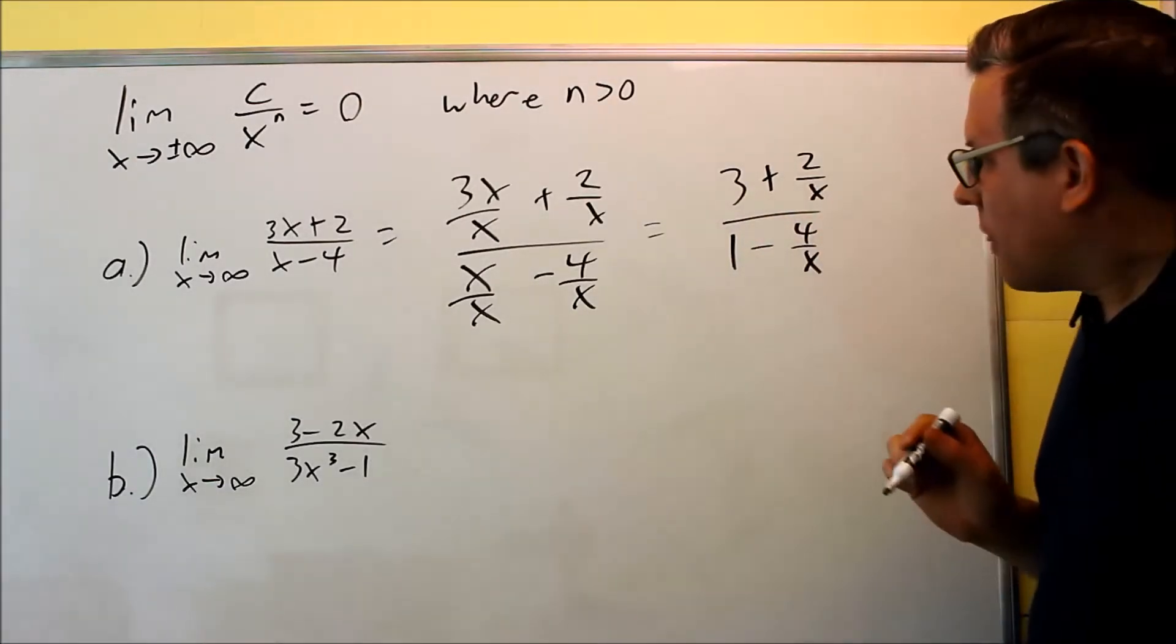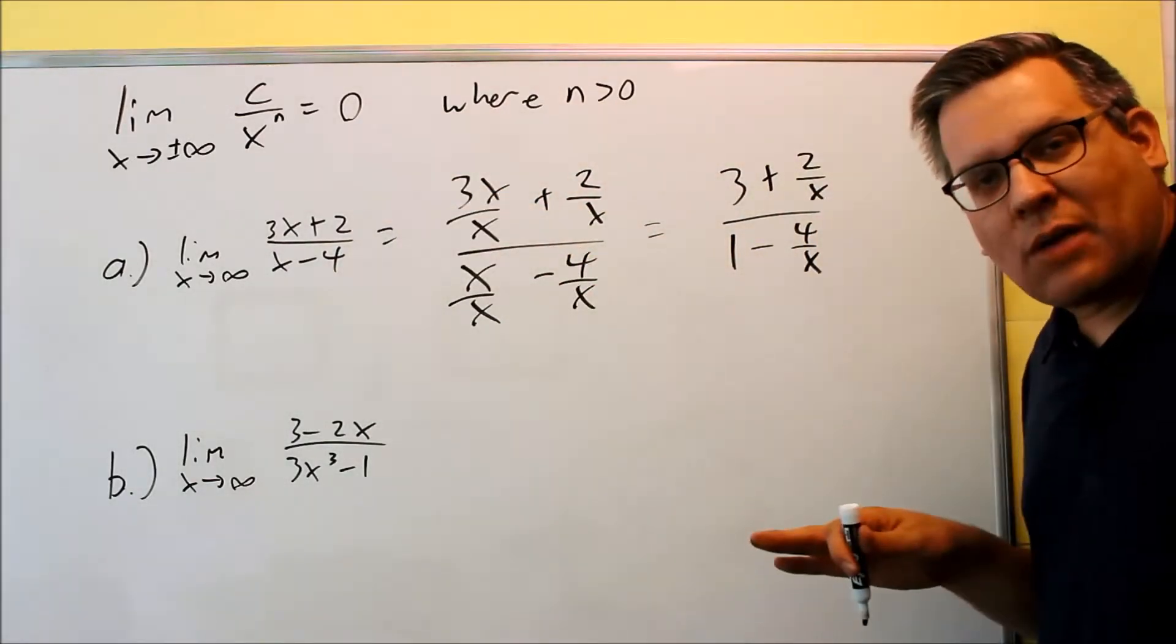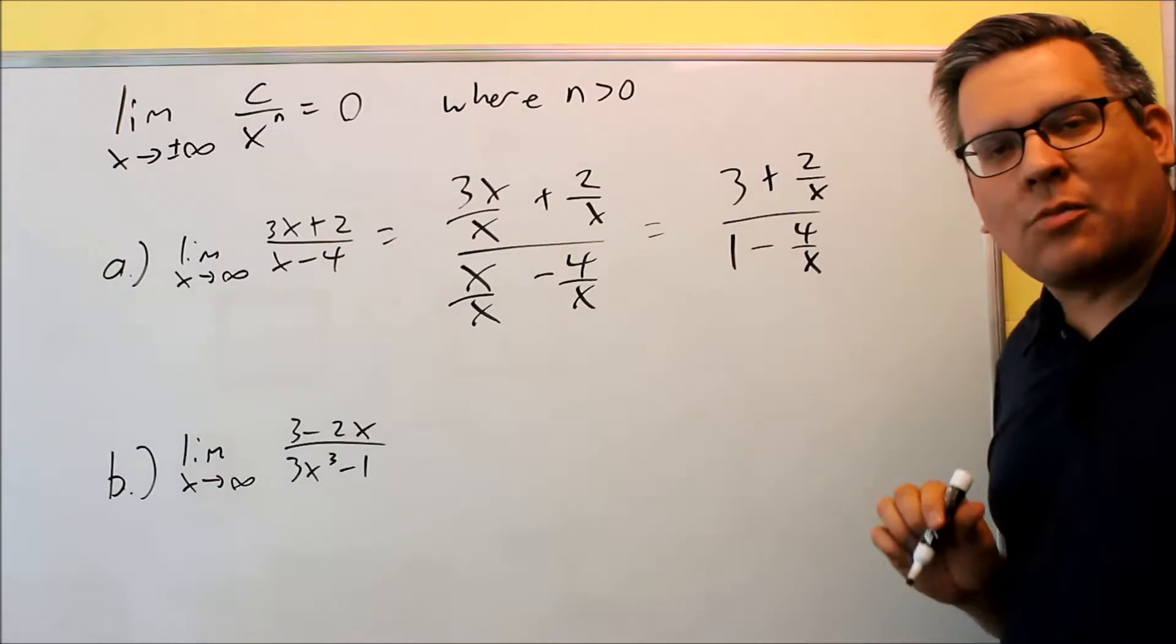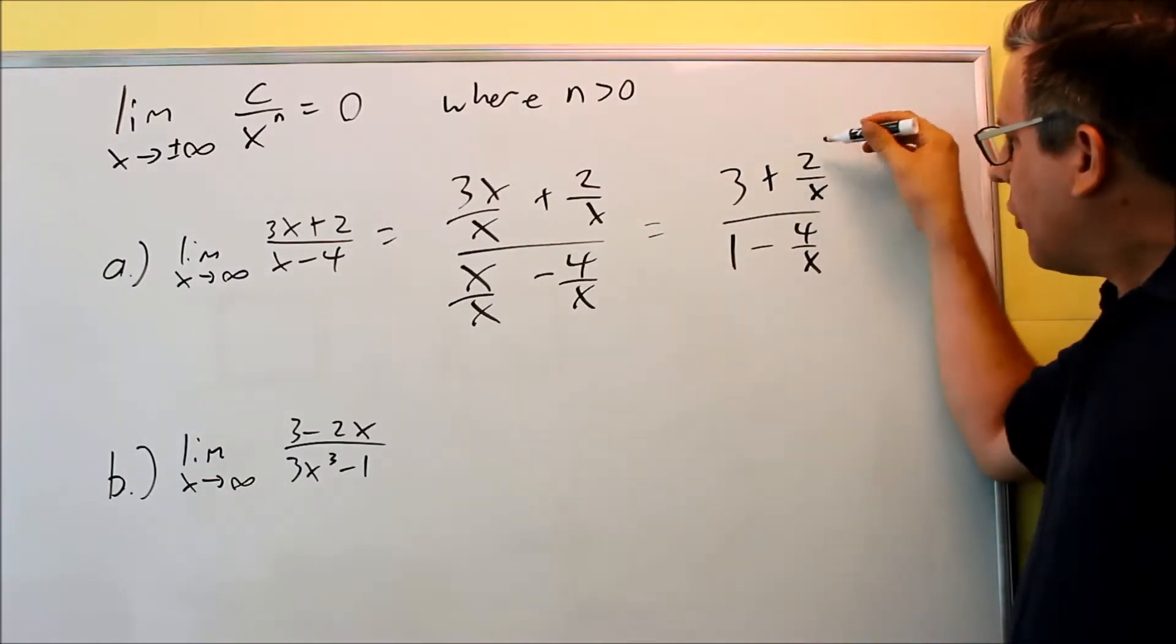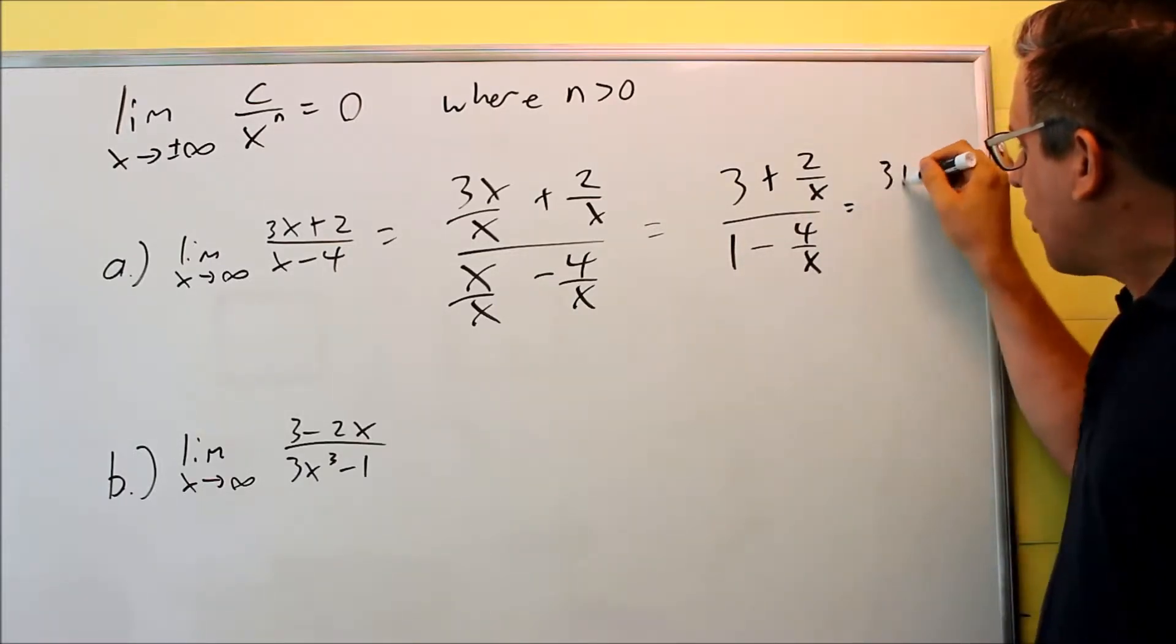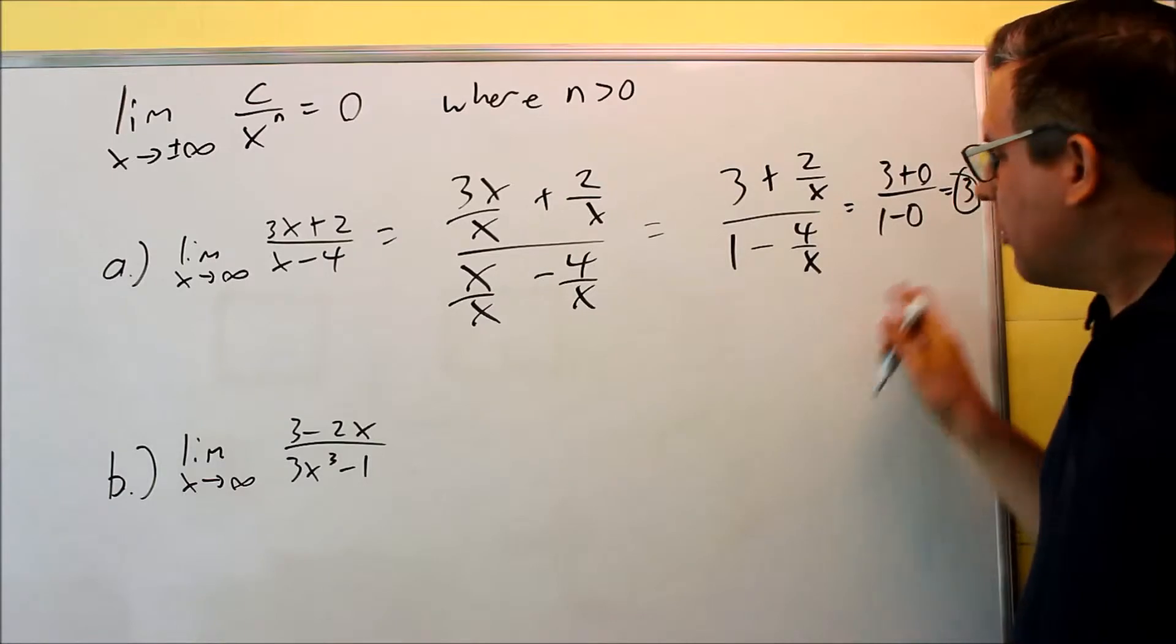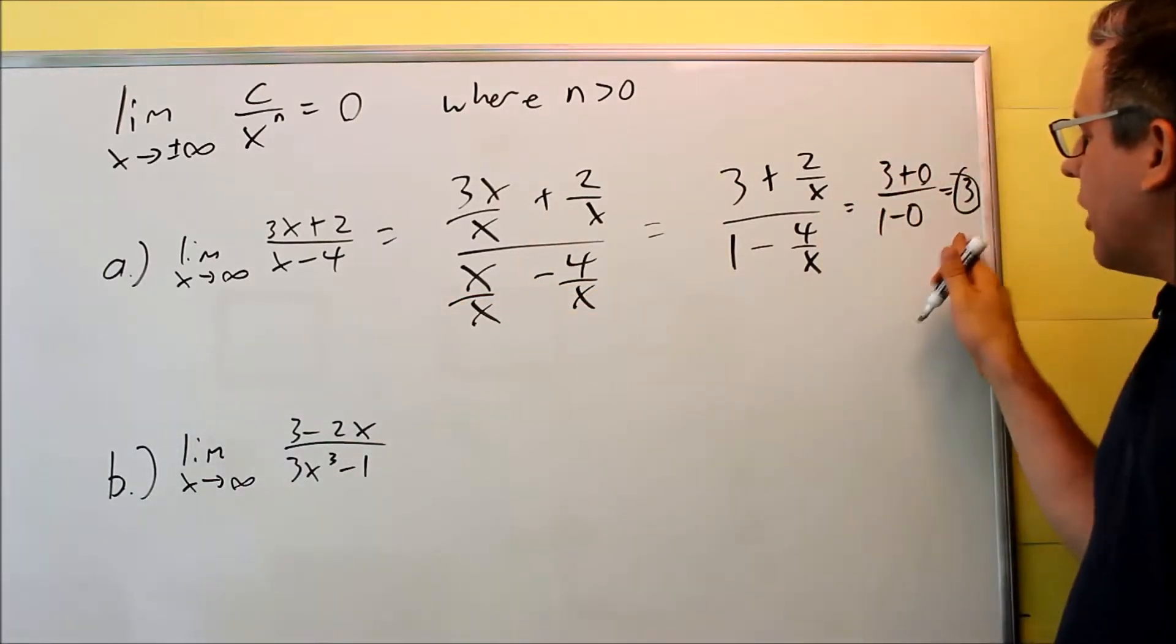Each of these, we can apply the limit, because remember we're technically using limit rules here. We're not writing the steps out, but technically what you're doing is you're applying the limit to each thing top and bottom separately. All these terms top and bottom separately have limits. So the ones that involve a constant over an X, those are going to go to 0. So that means that I have 3 plus 0 over 1 minus 0. That means that my answer is going to be 3. 3 is the limit answer for this one. So part A, the whole entire answer is going to be 3.